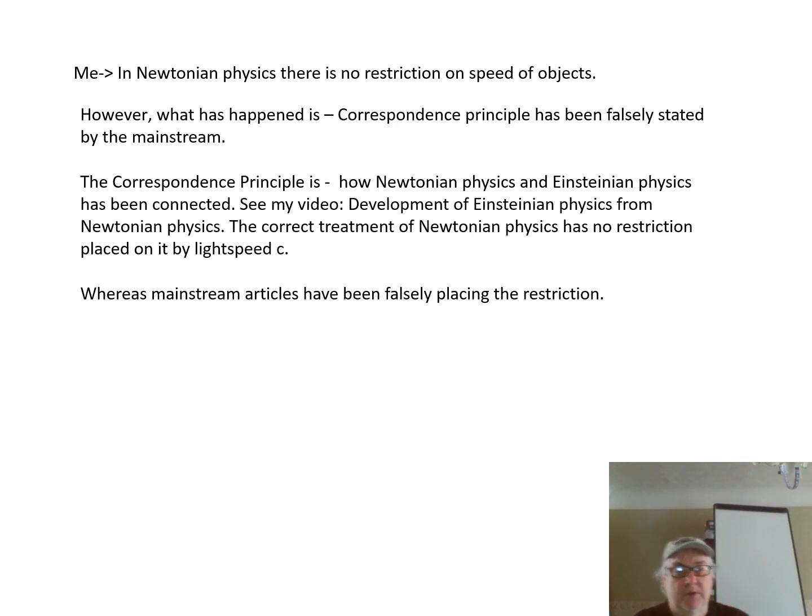So what it is, there's no restriction on the speed of objects in Newtonian physics. But what's happened is the correspondence principle has been falsely stated by the mainstream. The correspondence principle is how Newtonian and Einsteinian physics are connected, and you need to see my other video on that. And mainstream articles have been falsely placing that restriction on it.